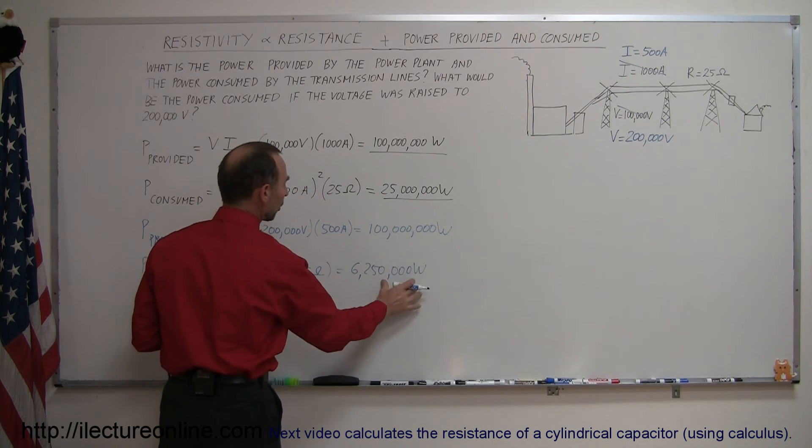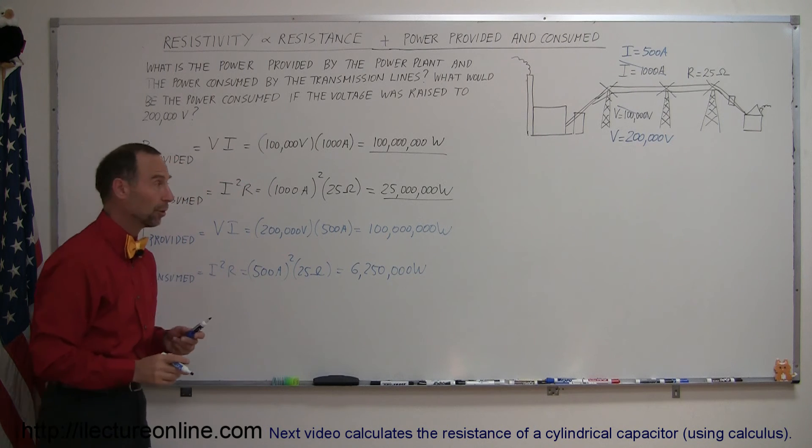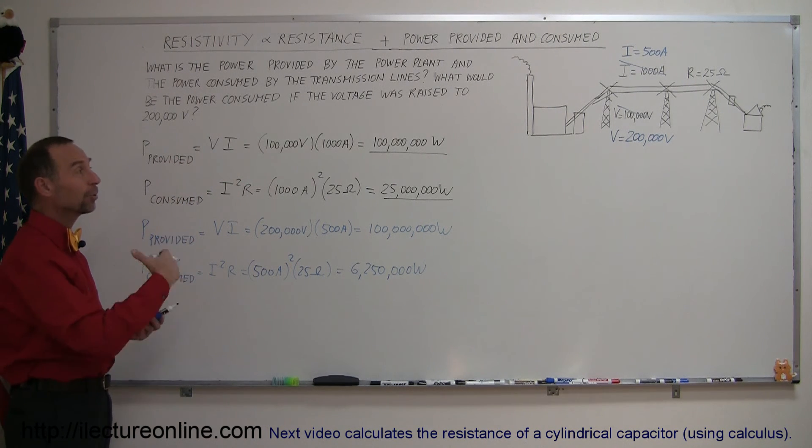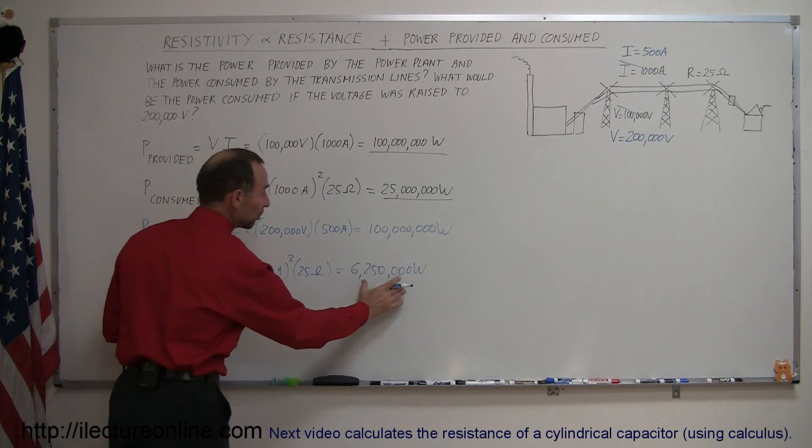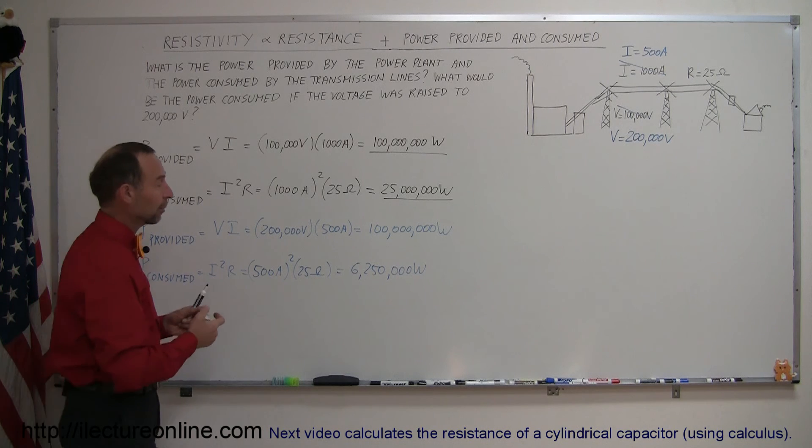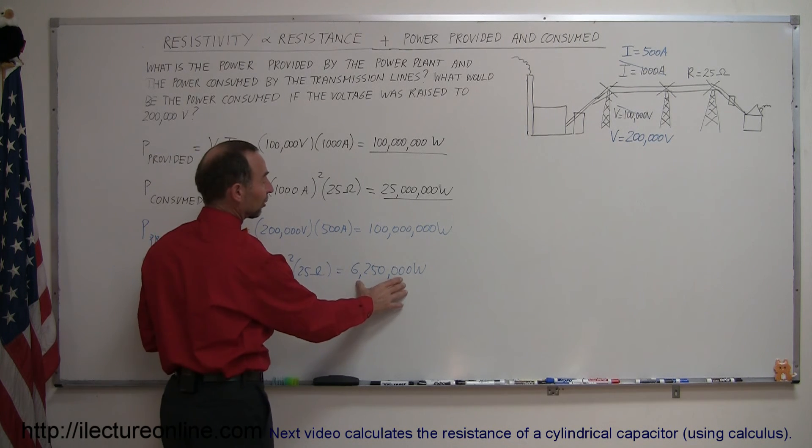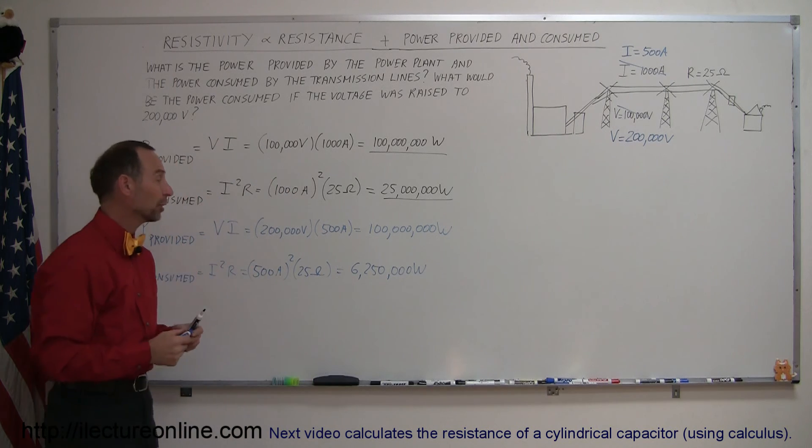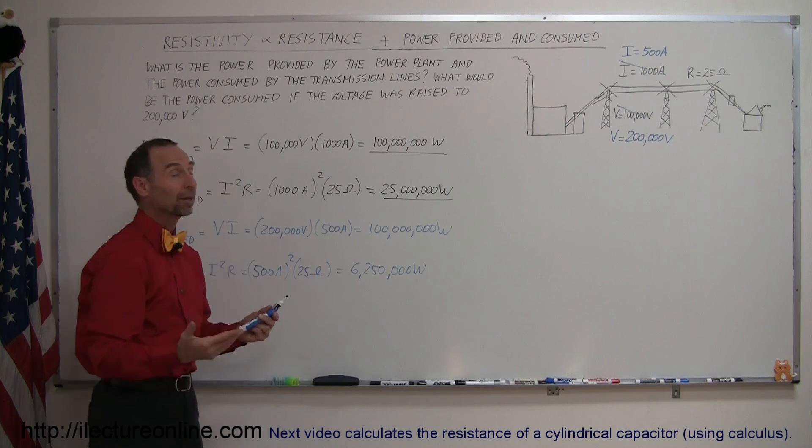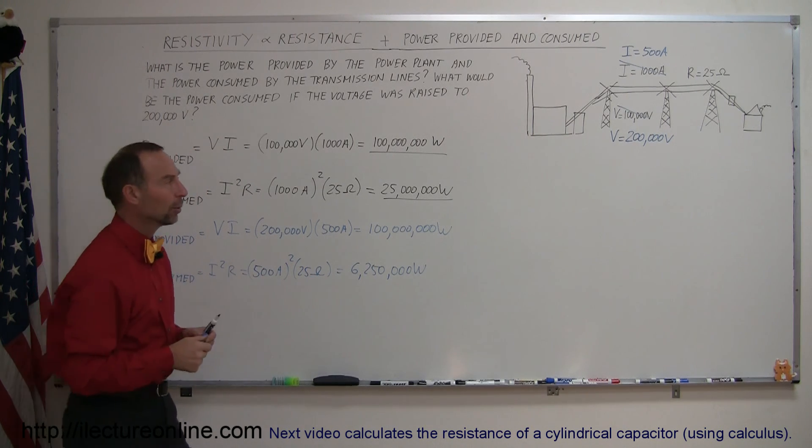Notice that's only a quarter of what you were consuming before. Wow, so what we would do then is of course keep increasing the voltage across transmission lines so there would be less and less power loss. The ideal situation is that the power loss on the transmission lines would be less than one percent, so we probably want to get this to less than a million watts. You could be providing 100 million watts while only consuming a million watts. That's not too bad, so you want to keep that lower and lower.